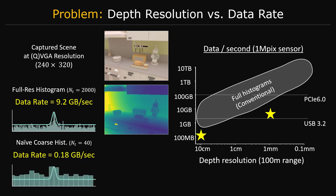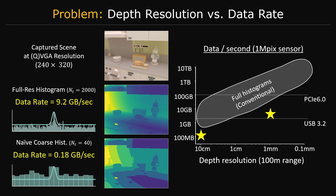Reducing the resolution of the histogram can make the data rates more manageable. However, this comes at the expense of depth resolution.